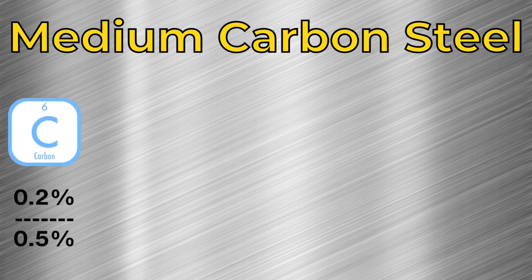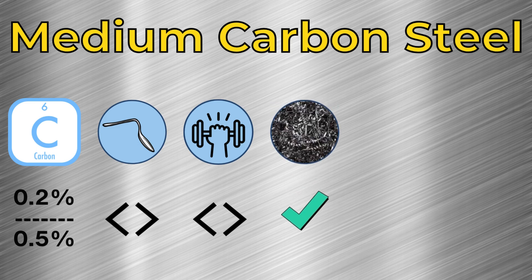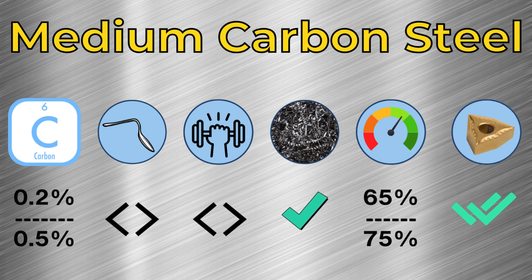Next, we have medium carbon steel, with carbon content between 0.2 to 0.5%. This type of steel has medium ductility, medium strength and hardness, and chip control is good. The machinability rating is between 65 to 75%. The mid-range of 0.2 to 0.4% carbon is the most popular carbon steel on the shop floor, because it yields a good balance between machinability, strength, and chip control. Any cutting tool and carbide grade that is designed to machine steel will work well.